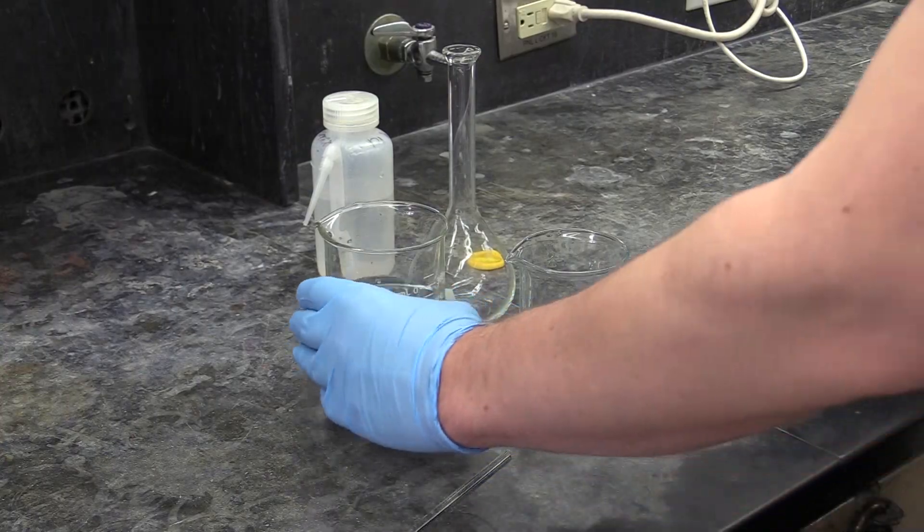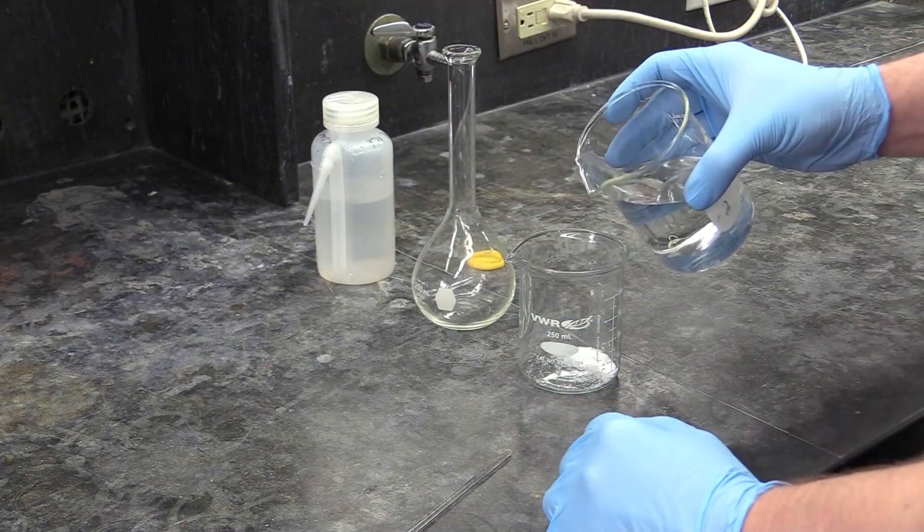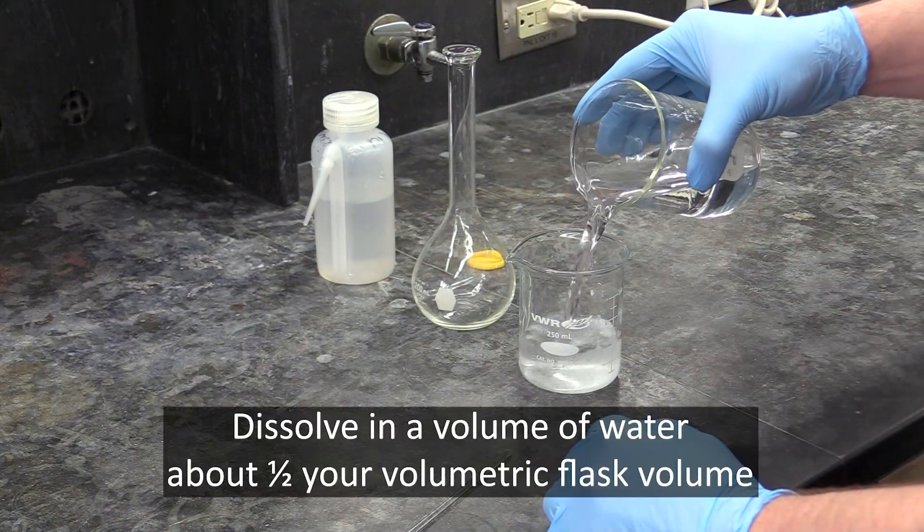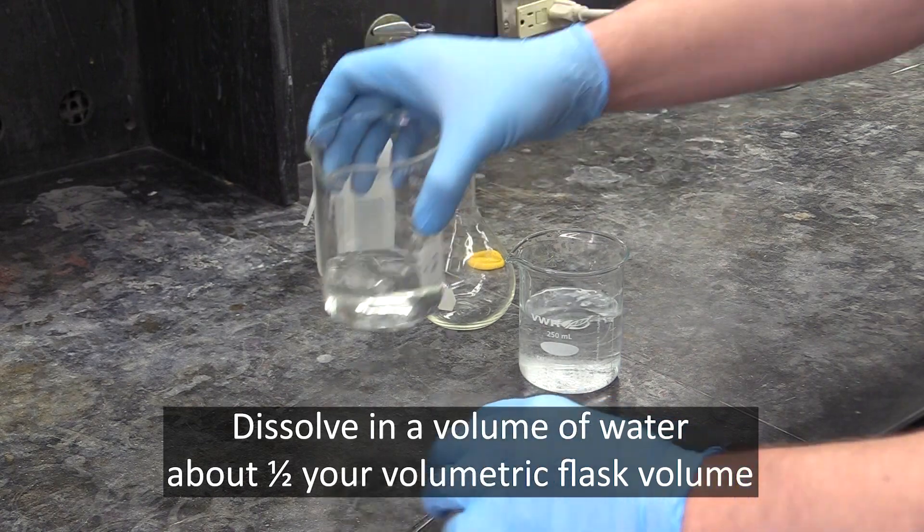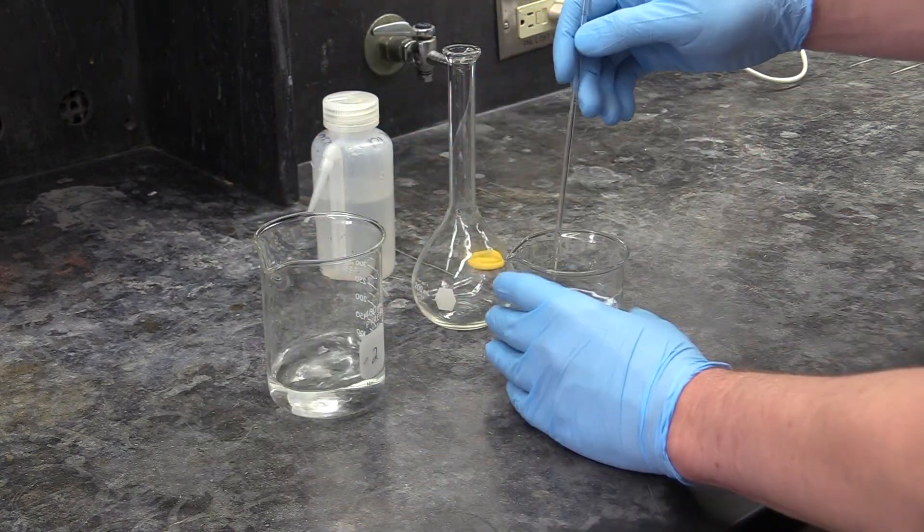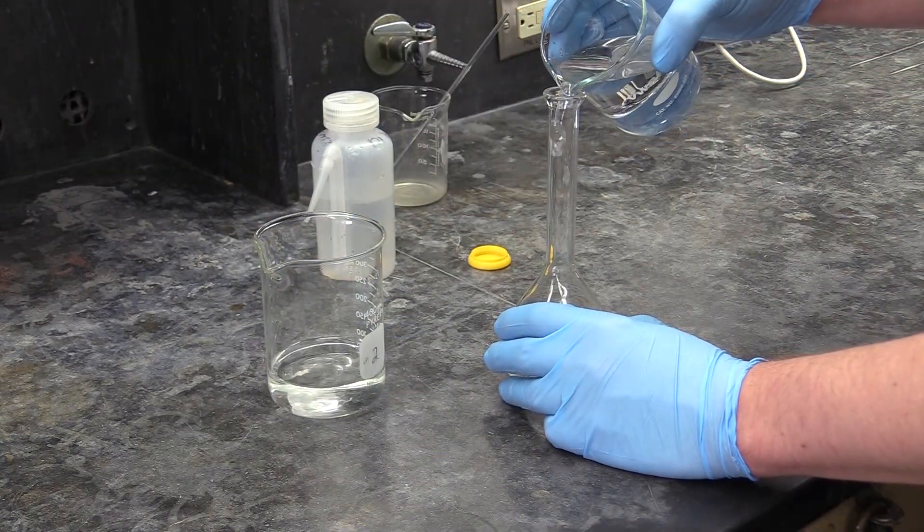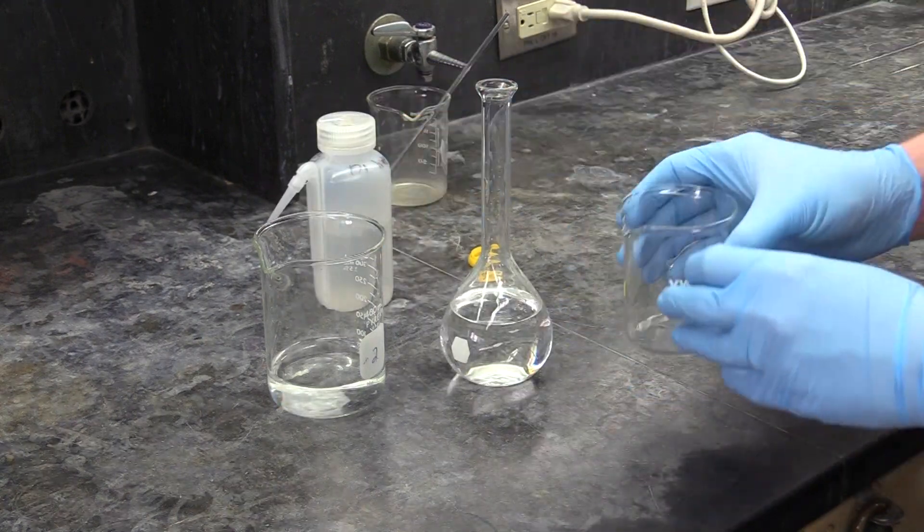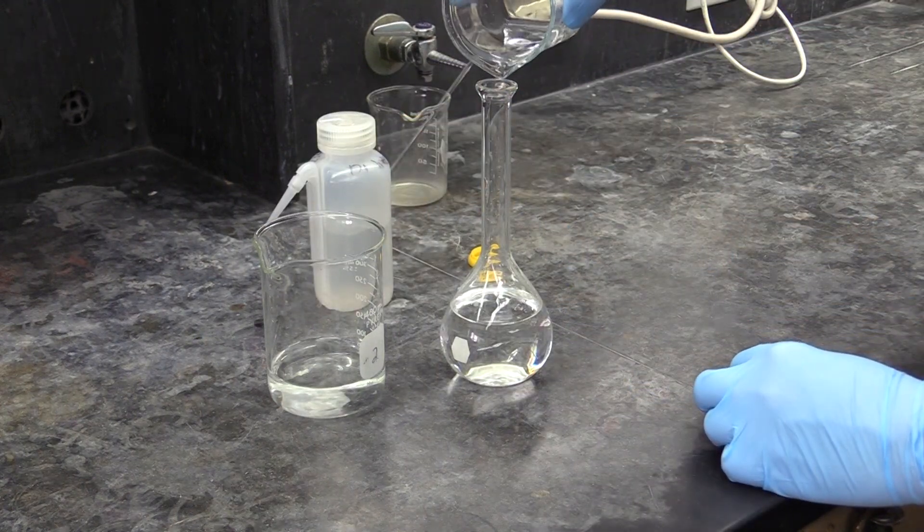You'll then dissolve the acid in some water. For the amount of water, you want to use roughly half of whatever your volumetric flask volume is, or maybe a little less. After the acid is dissolved, pour it into your volumetric flask, then rinse the beaker out with a little water and pour this rinse water into the flask.